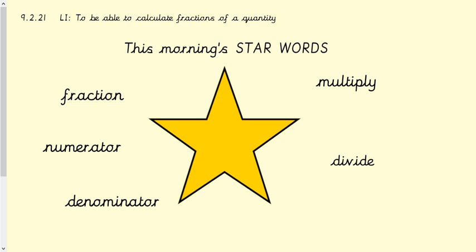We're moving on now from adding and subtracting and we're looking at calculating fractions of a quantity. Quantity just means the amount of a number, so don't worry too much about that word. Our star words are fraction, numerator, denominator, multiply, and divide. Quite straightforward star words today.